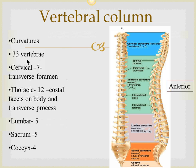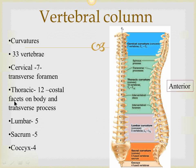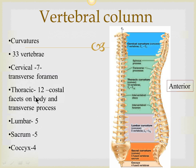To distinguish the vertebrae: cervical vertebrae have a transverse foramen (foramen transversarium) in the transverse process. Thoracic vertebrae have costal facets — smooth articular surfaces for the ribs — on the body and transverse processes. Lumbar vertebrae are identified by elimination: no transverse foramen, no costal facets. The sacrum and coccyx are easy to identify by appearance.